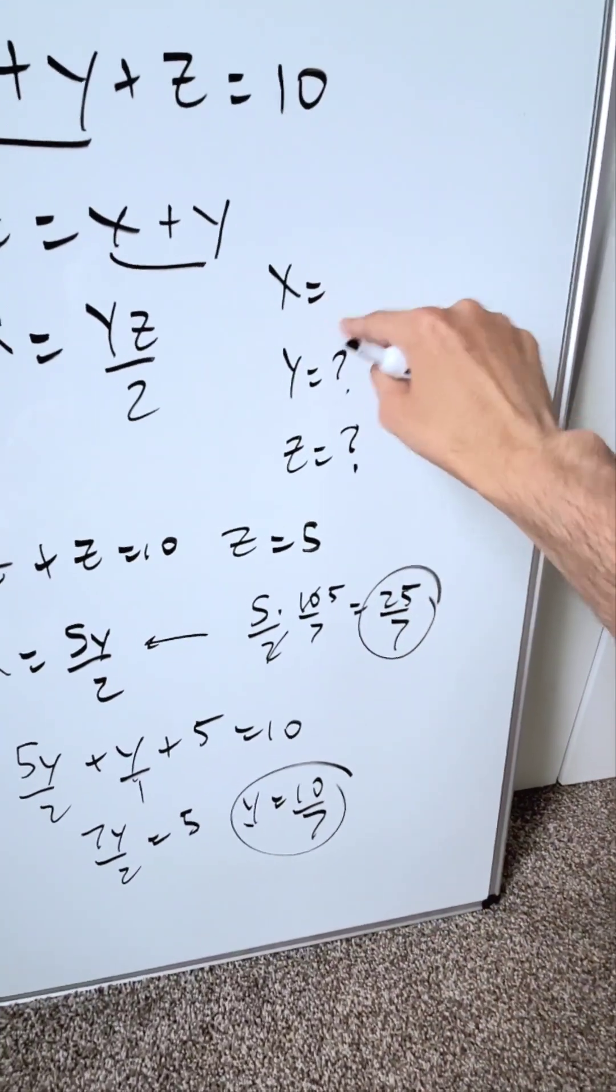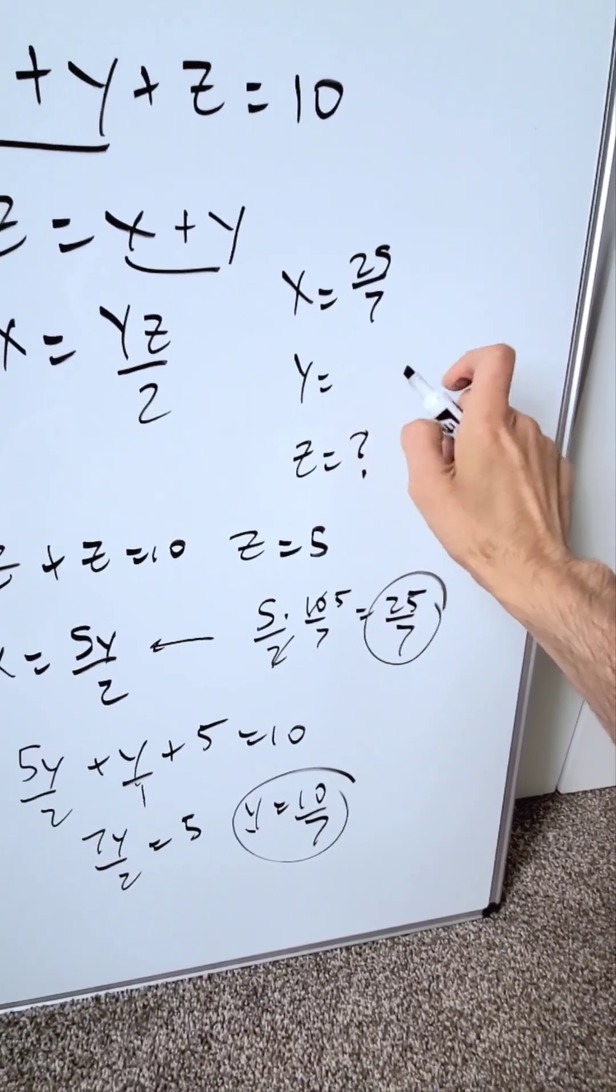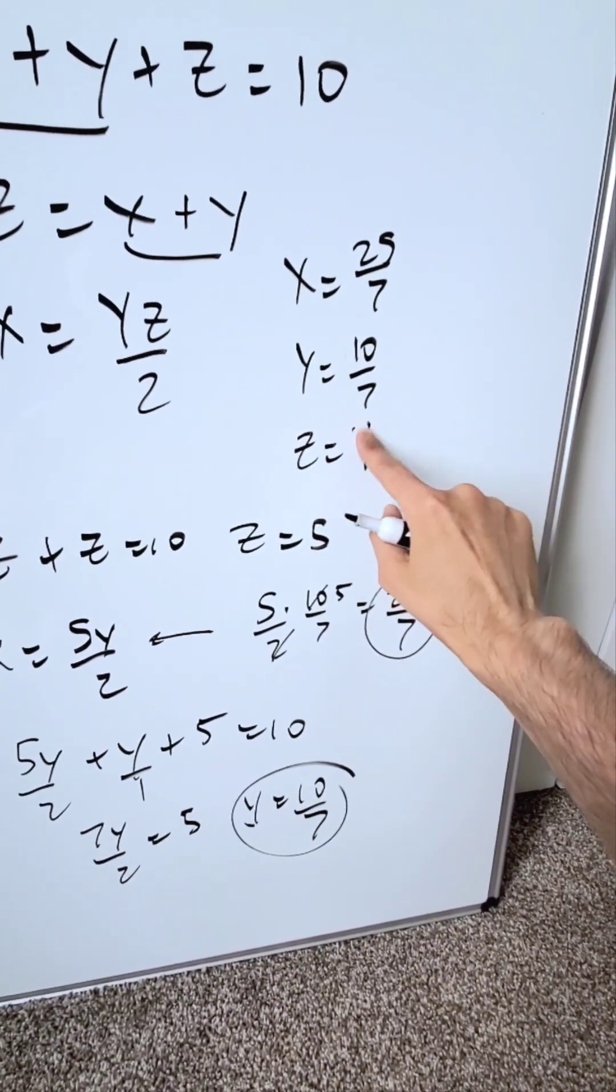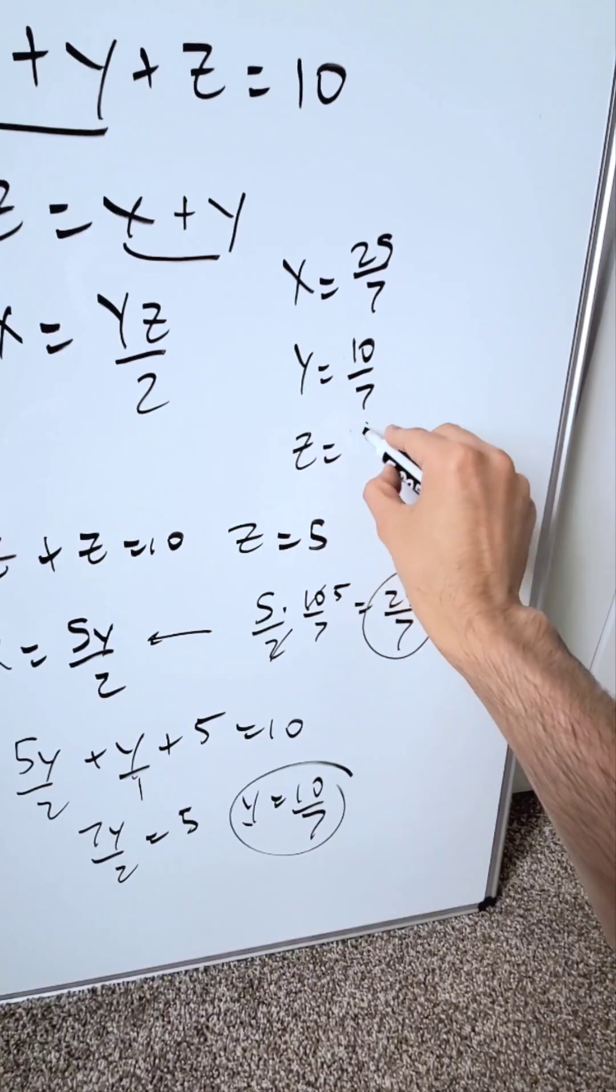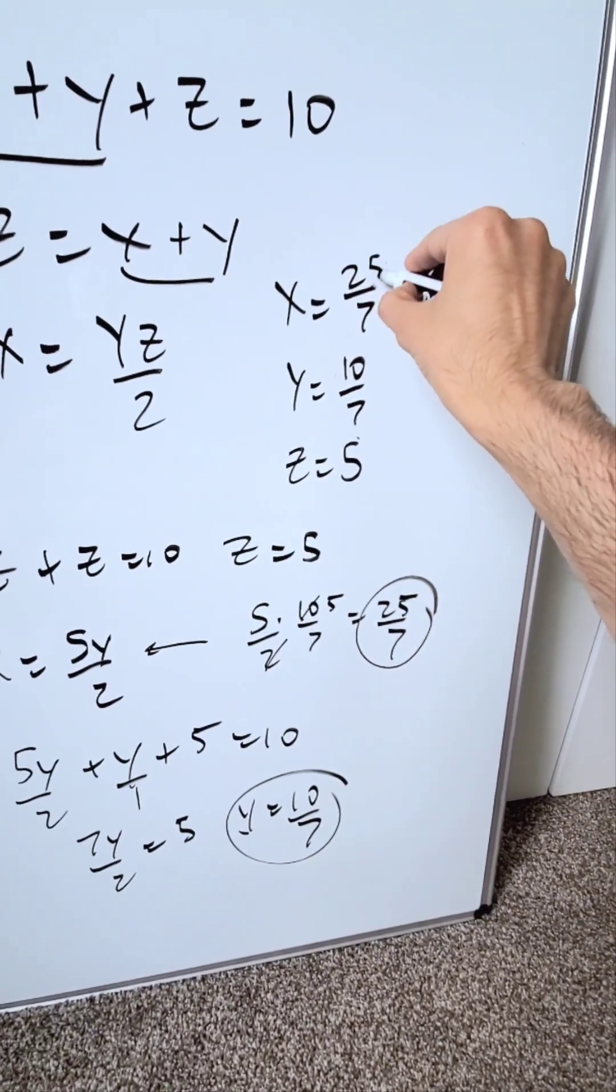So let's bring these items in. We know x here is equal to 25 over 7. We know y is equal to 10 over 7. We know z is equal to 5, but you see how everything here is over 7 in terms of the denominators, but the value of z is not.